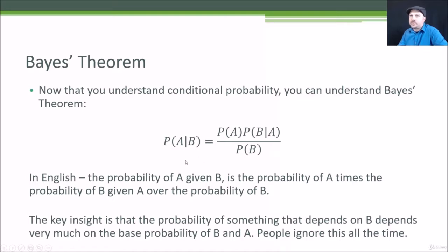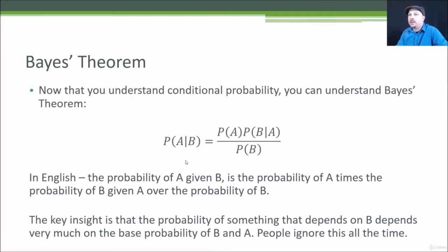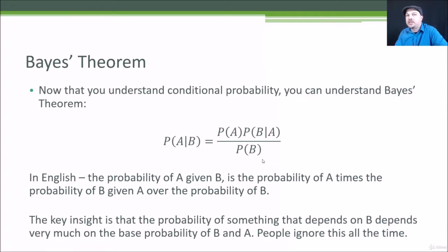You can substitute A and B with whatever you want. One common example is drug testing. We might ask: what's the probability of being an actual user of a drug given that you tested positive for it? Bayes' theorem is important because it calls out that this very much depends on both the probability of A and the probability of B — so the base overall probability of being a drug user and the overall probability of testing positive.